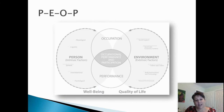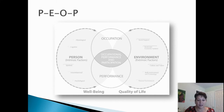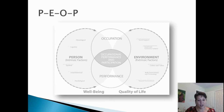We're going to look at the PEOP model using a couple of different visual models. This is the older visual model, and I actually think it's a little easier to understand because it helps us look at the depiction of the person, which is counted as intrinsic factors, and the environment, which is looked at as extrinsic factors, and how they meet together in occupational performance in the middle. This model, similar to the CMOP-E, says that the only way that the person and the environment meet is through a person's occupational performance and engagement.